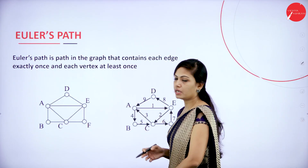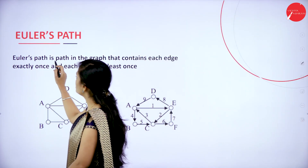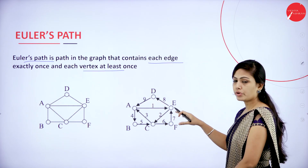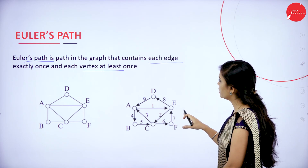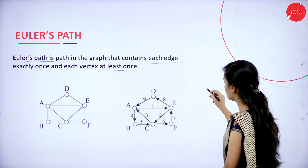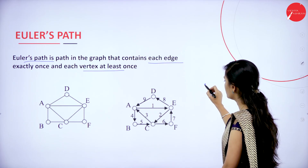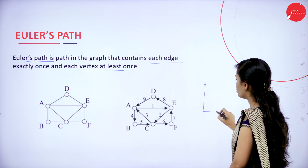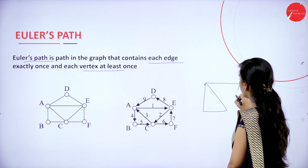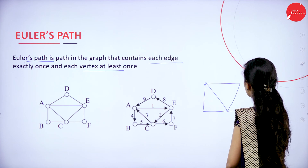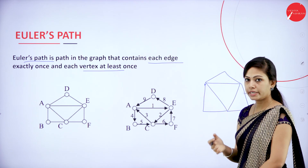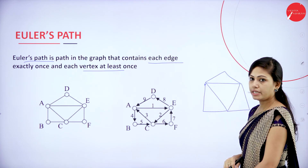Next we have Euler's path. So what is Euler's path? This is an example for Euler's path because there is no retracing of edges here. Each edge is used exactly once and each vertex at least once. I will draw this: point A to B, B to C, C to A, then D. This point and this point have not been retraced; edges have not been repeated.